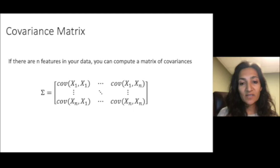Recall that the covariance matrix is an n by n matrix of pairwise feature covariances, assuming you have n features in your data. Along the diagonal it has individual feature variances and in off diagonal entries it has pairs of covariances.